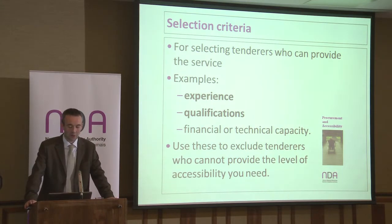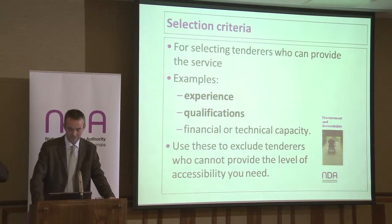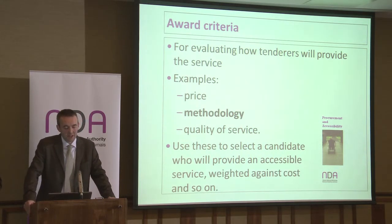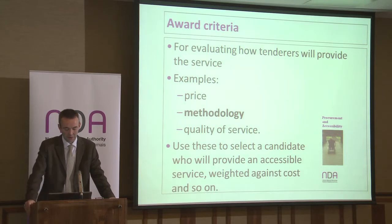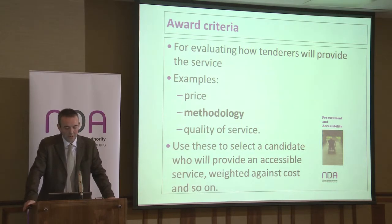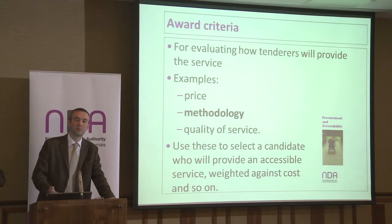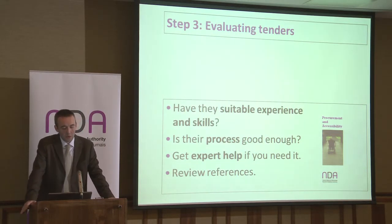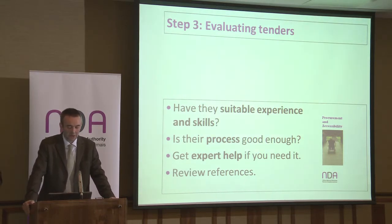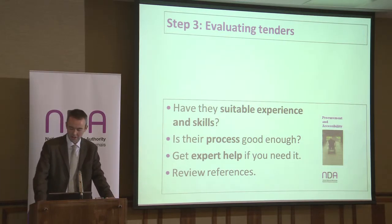For selection criteria, you want to make sure anyone you're considering has the capacity to provide the service. Award criteria are different — selection criteria are yes or no, whereas award criteria involve longer questions: how exactly are you going to do this? Things you'll include are price — very important — but also methodology: how exactly are you going to give us something and make sure it is accessible? You're getting people to tell you about the process they're going to use to create something that is fully accessible.